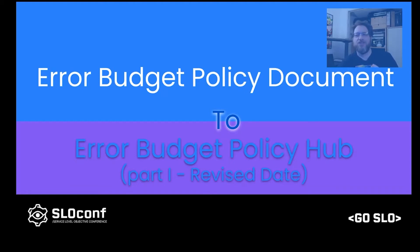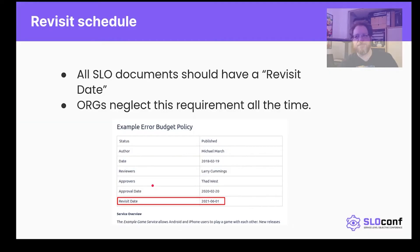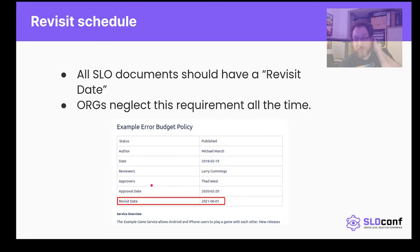Our first example of how to spice up these documents and make them more relevant is transforming your error budget policy document into an error budget policy hub. Let's focus on the revised date of these documents. All SLO documents like the error budget policy have a revisit date, and believe it or not, these get ignored all the time. For instance, the famous error budget example you can get off the internet has a revisit date this June.